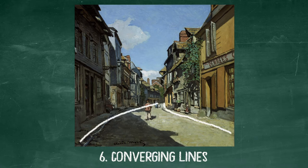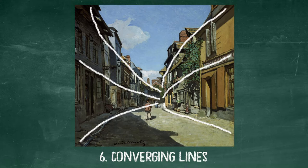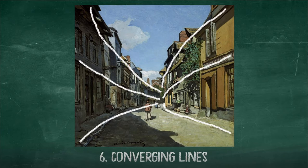When parallel lines converge in the painting it suggests distance. So we see the street narrowing and curving away into the distance, and the houses getting smaller and smaller as they are further away from us.